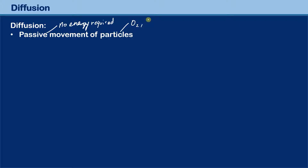What are particles? Particles could be, for example, the particles of air — O2, oxygen — it could be carbon dioxide, all the gases, it could be water, H2O, and so on. So when we talk about any other molecules — perfume, for example, which I'm going to use as an example later on — this is basically what I mean with particles, and they move without having an extra energy requirement.